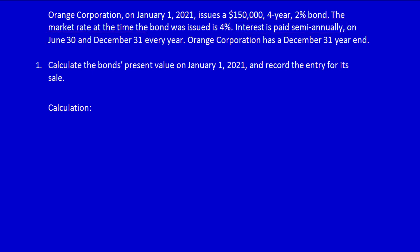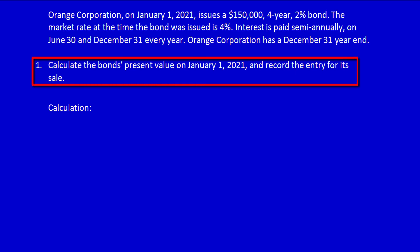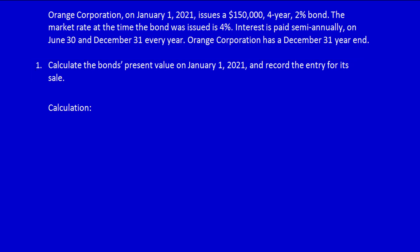Orange Corporation has a December 31st year end. We have to calculate the bond's present value on January 1st, 2021 and record the entry for its sale. We have to calculate the present value of all future cash flows. This bond is outstanding for more than one year, and any liability outstanding for more than one year must take into account the time value of money.